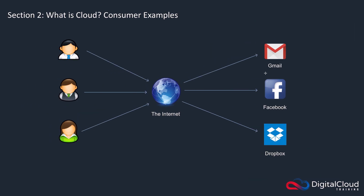Looking at our examples, clearly we have third parties — Gmail, Facebook, and Dropbox. You can access these services over the internet and you do so in an on-demand way, so you can use them as much or as little as you like from pretty much anywhere you have an internet connection. So these are good examples of cloud services.